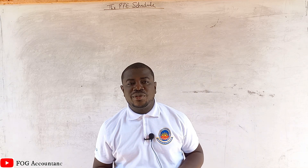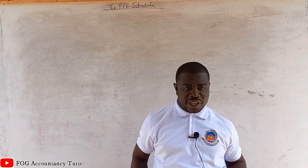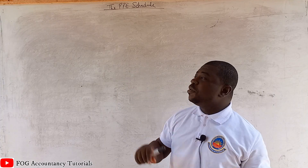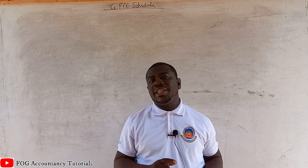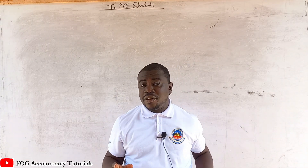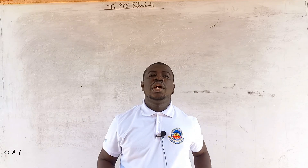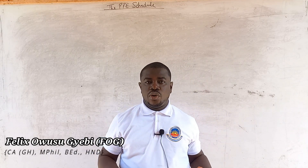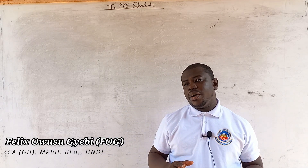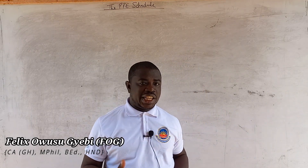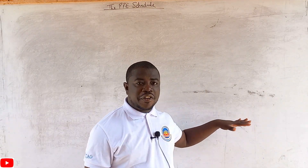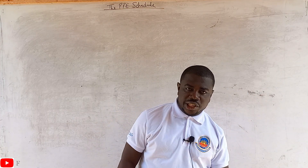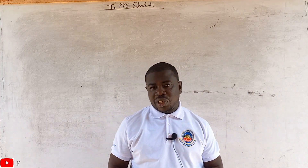Good day. Welcome to another session of Work Accountancy Tutorial. Today we are going to learn about the PPE schedule. It is a tool that we use in published accounts to prepare workings for PPE — Property, Plants and Equipment — so that we can have our final figure for Property, Plants and Equipment to take to the statement of financial position in a published account setting.